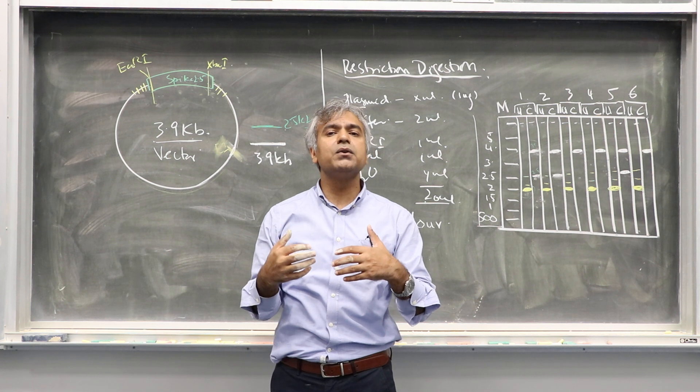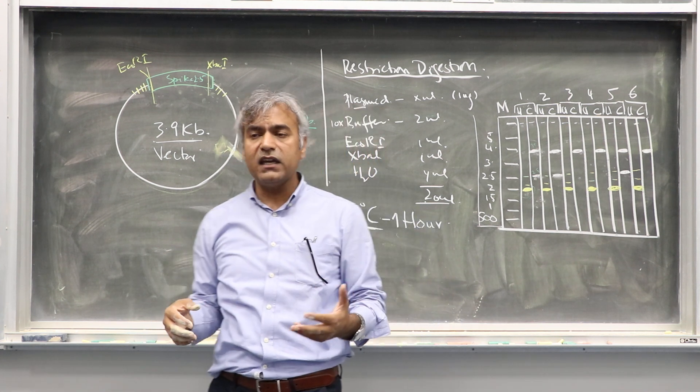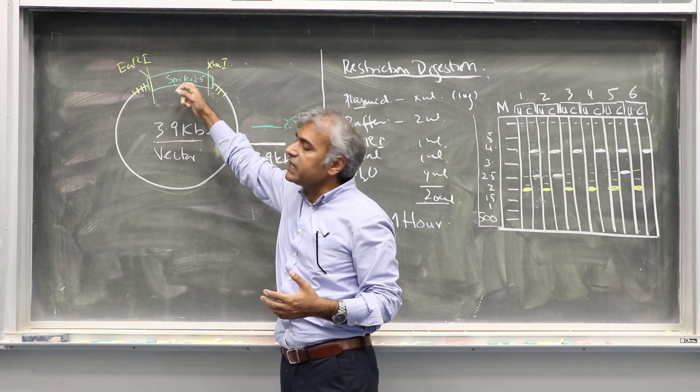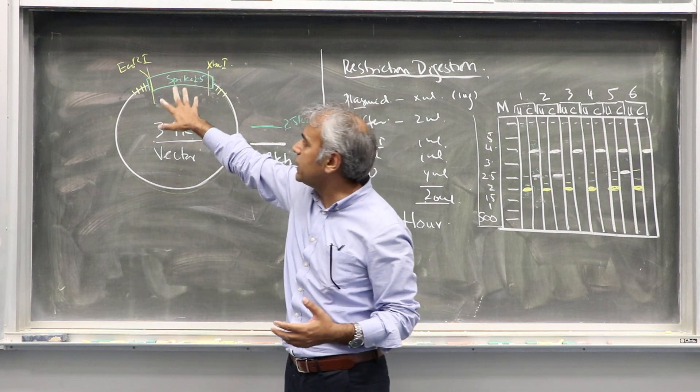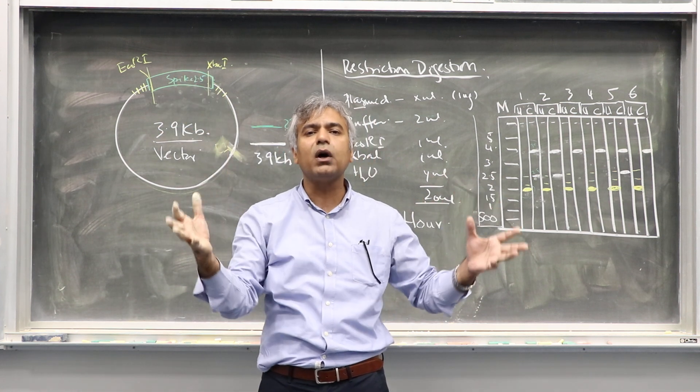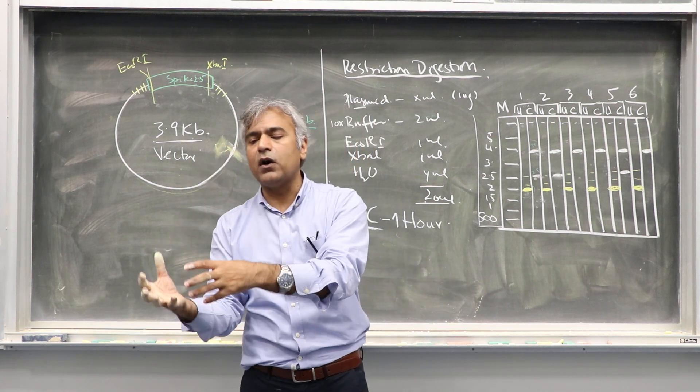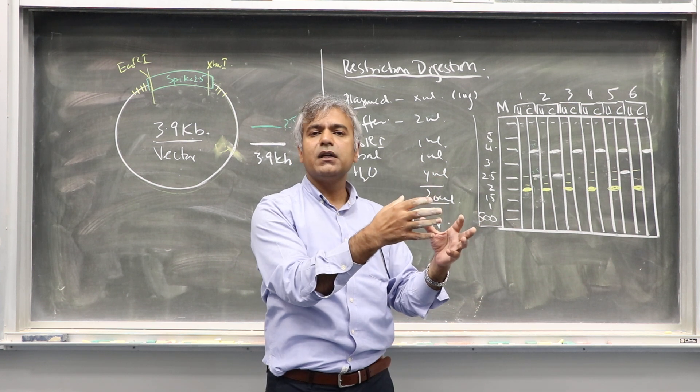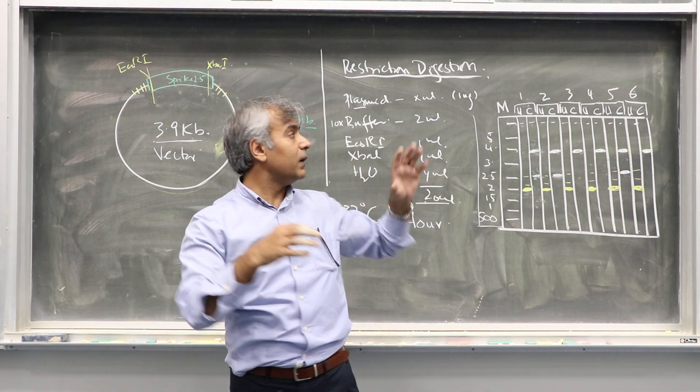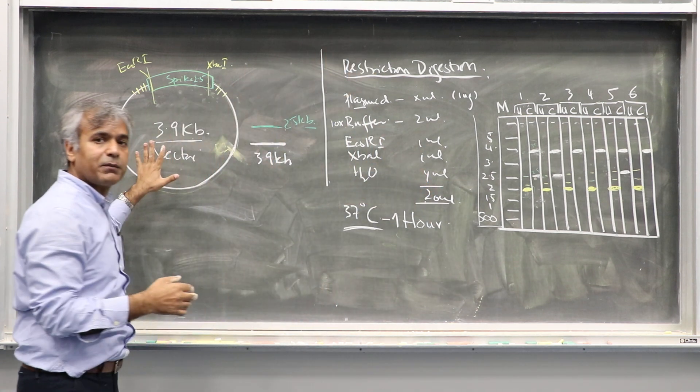We are not going to perform expression right away. First, we are going to have ligation of spike gene. ECOR1, XPA1 digested, PET21 digested with ECOR1, XPA1. Add DNA ligase. Transform this ligation mix into DH5-alpha first, and confirm the clone using same strategy, which we did for general purpose cloning vector.